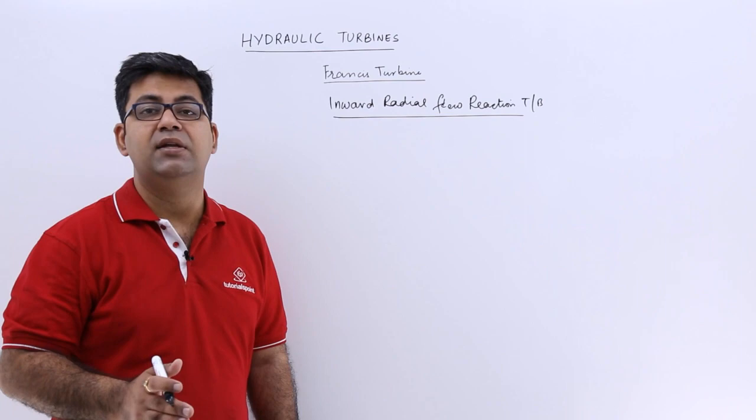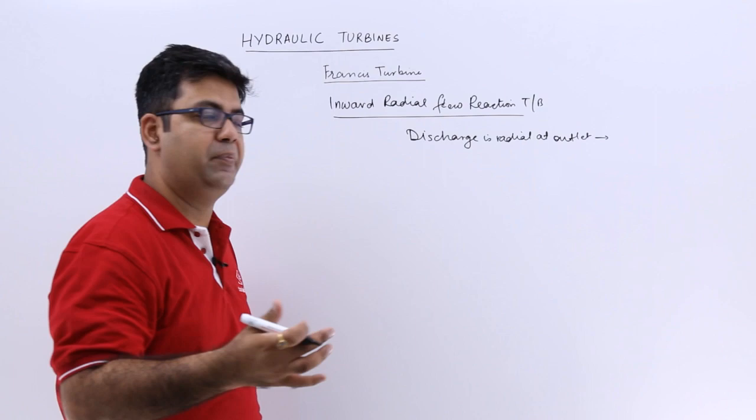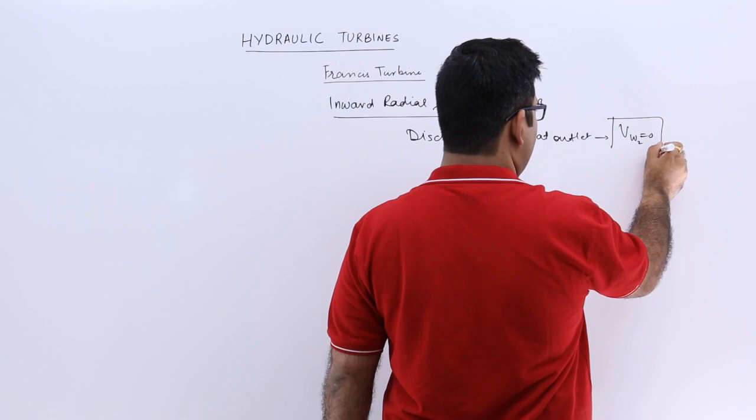This means if the discharge is radial at the outlet, the Vw2 velocity would be 0 because beta is 90 degrees. So Vw2 is 0.